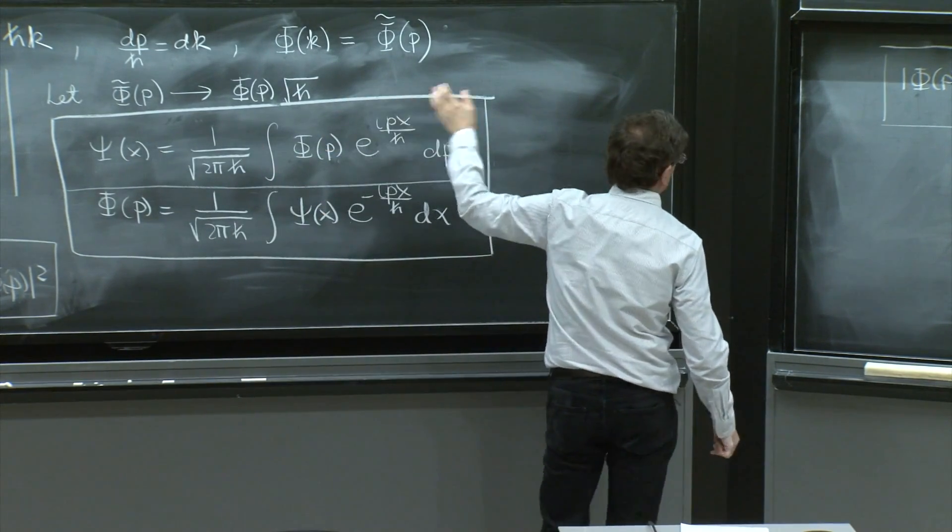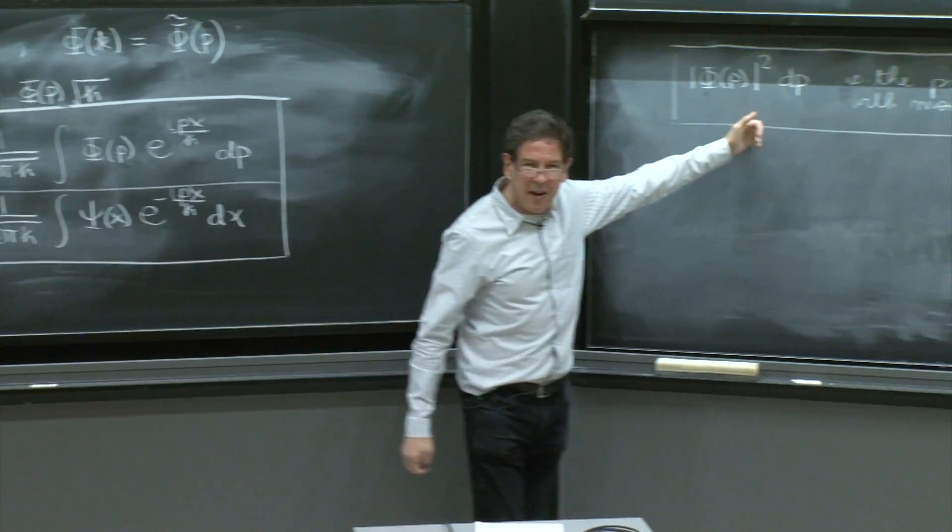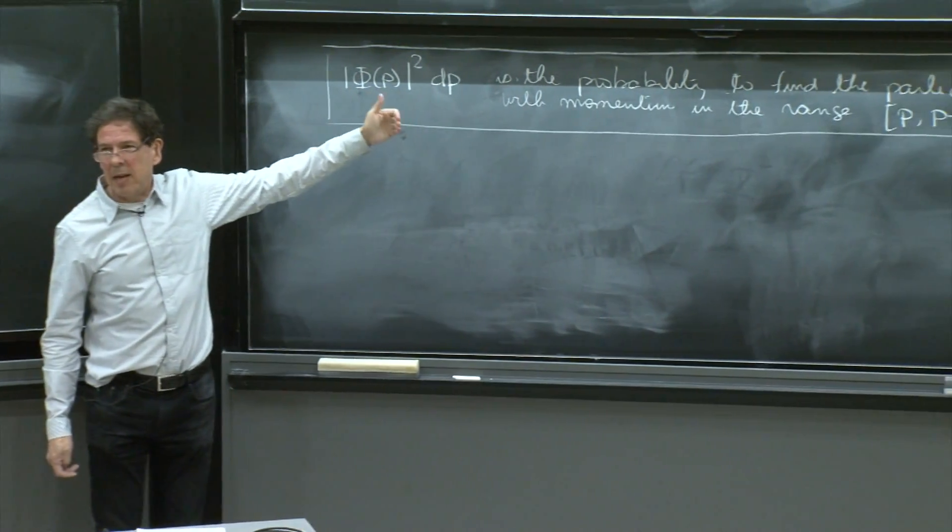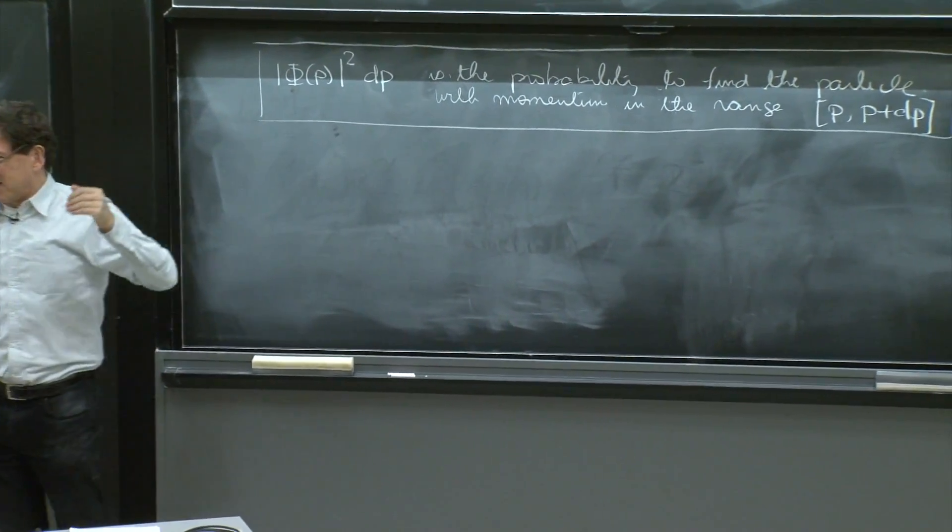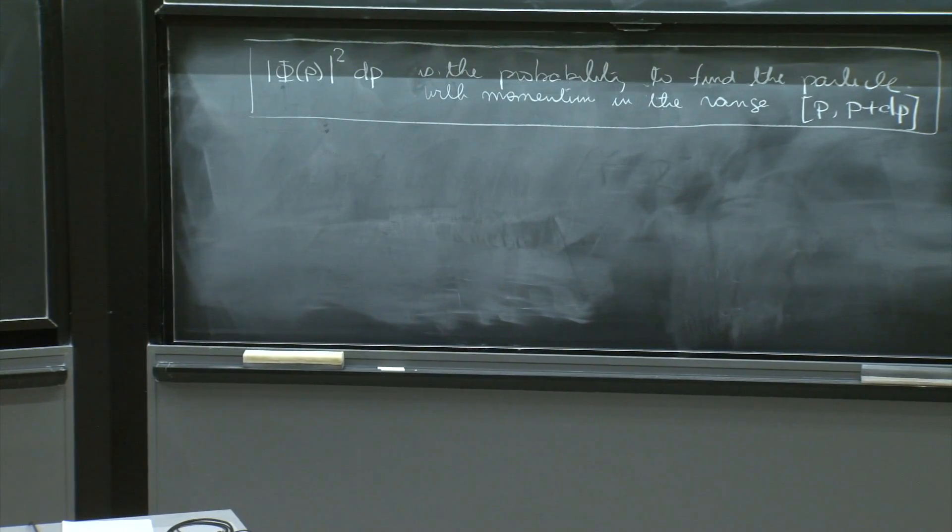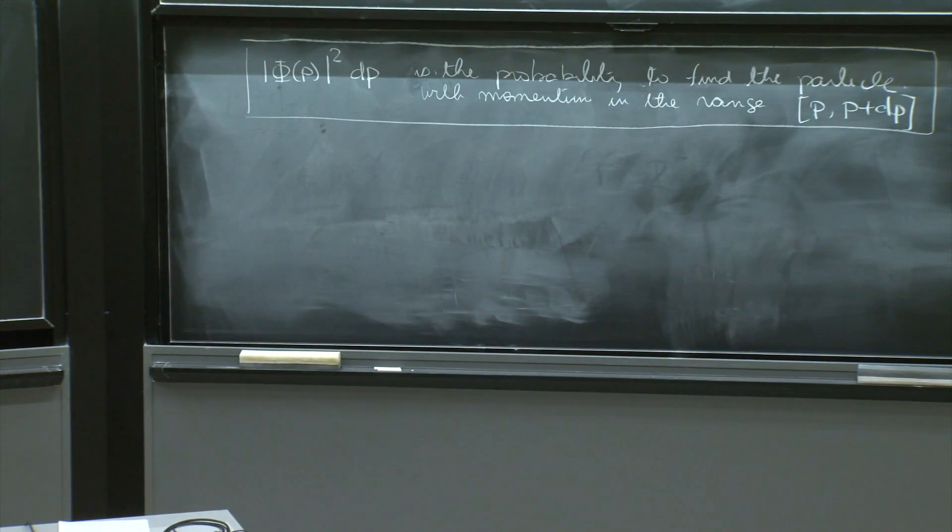Phi of p is the weight of the superposition, but finally it's given a probabilistic interpretation. It represents the probability to find the particle with some momentum.